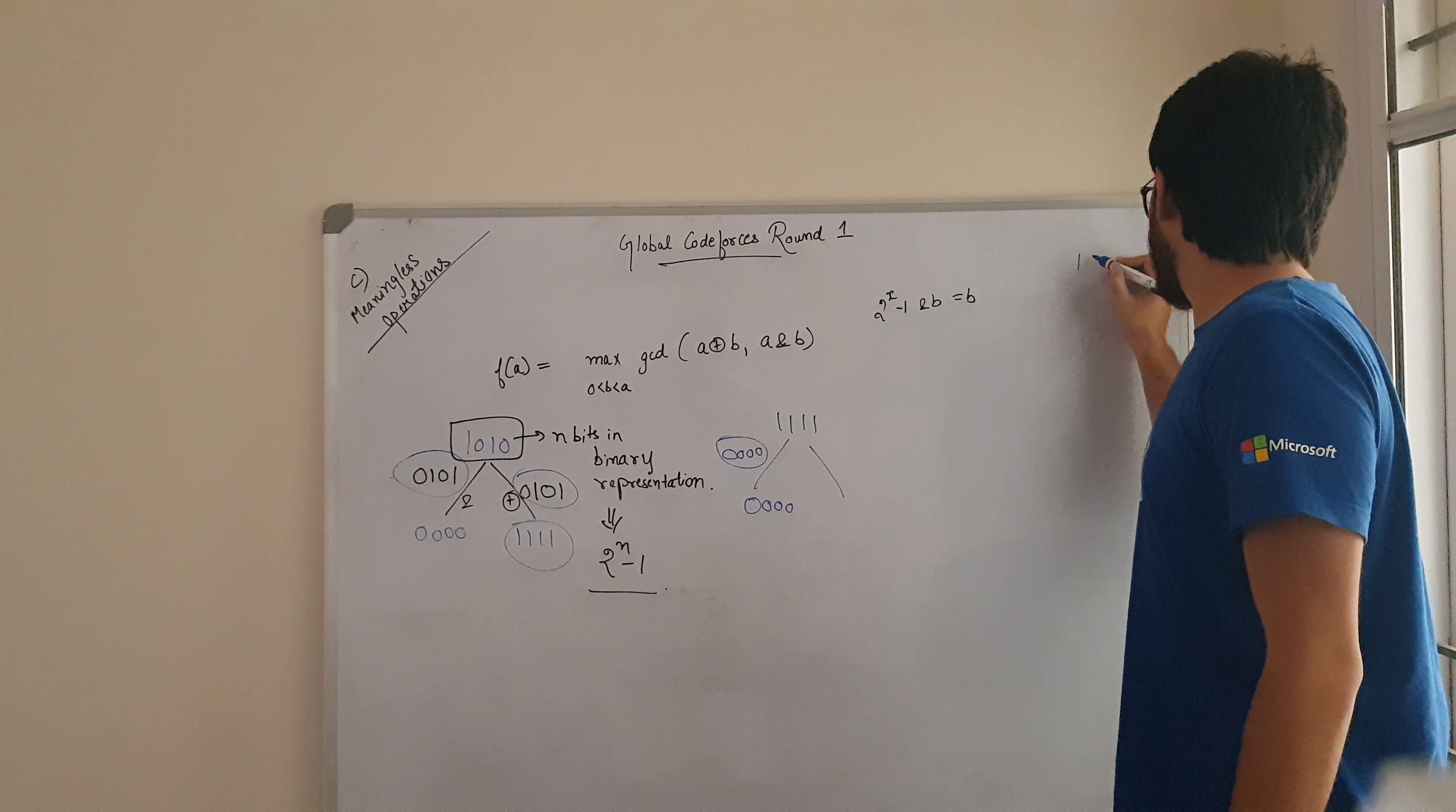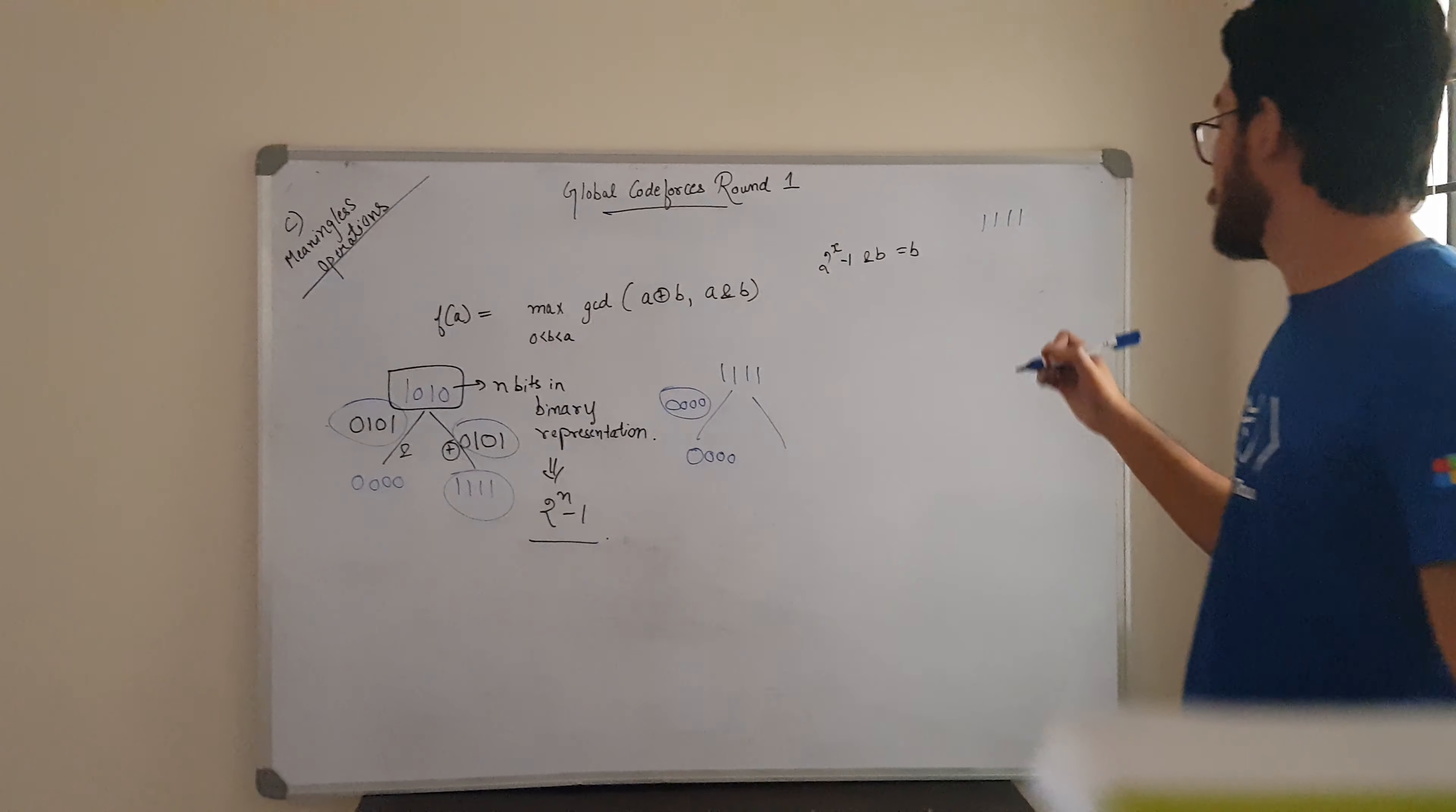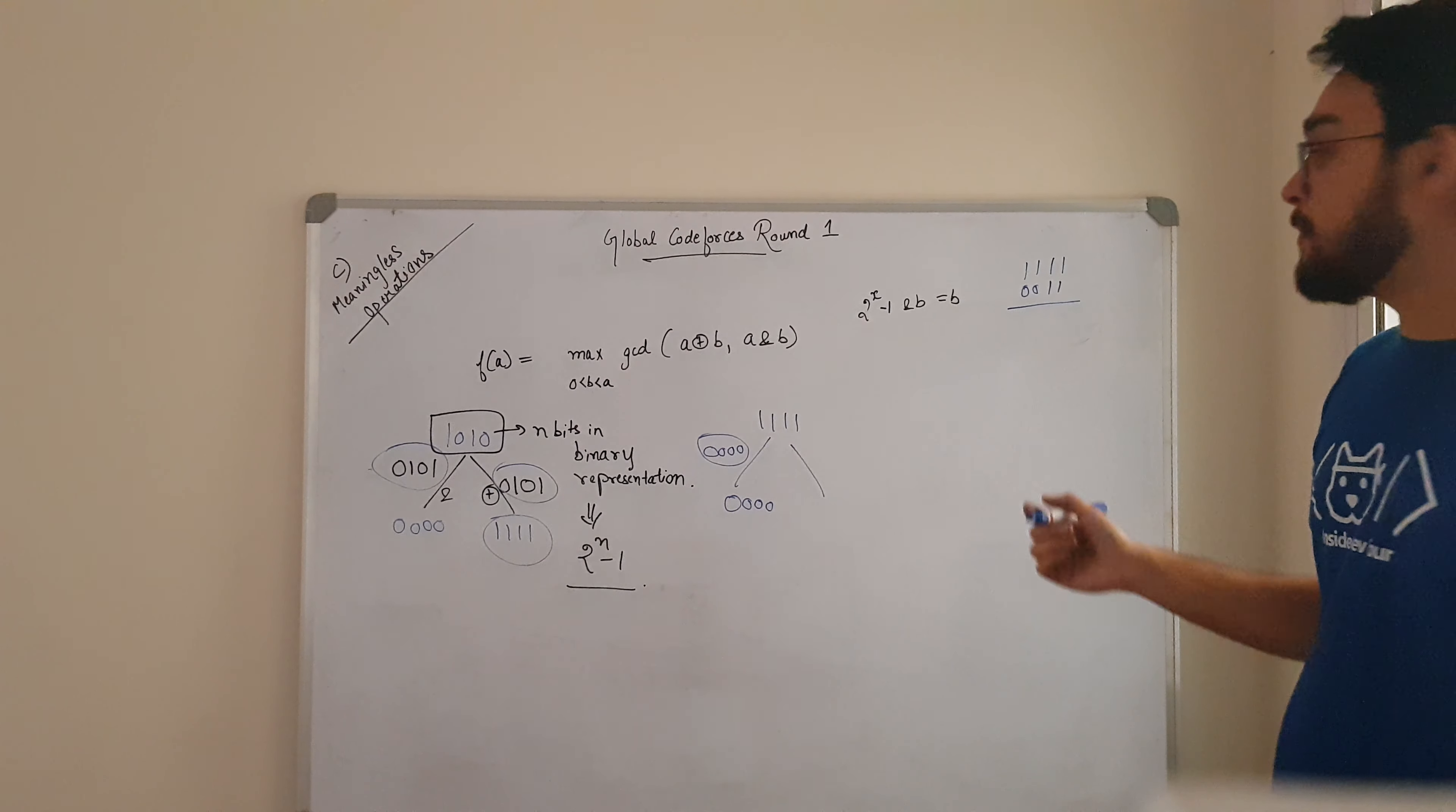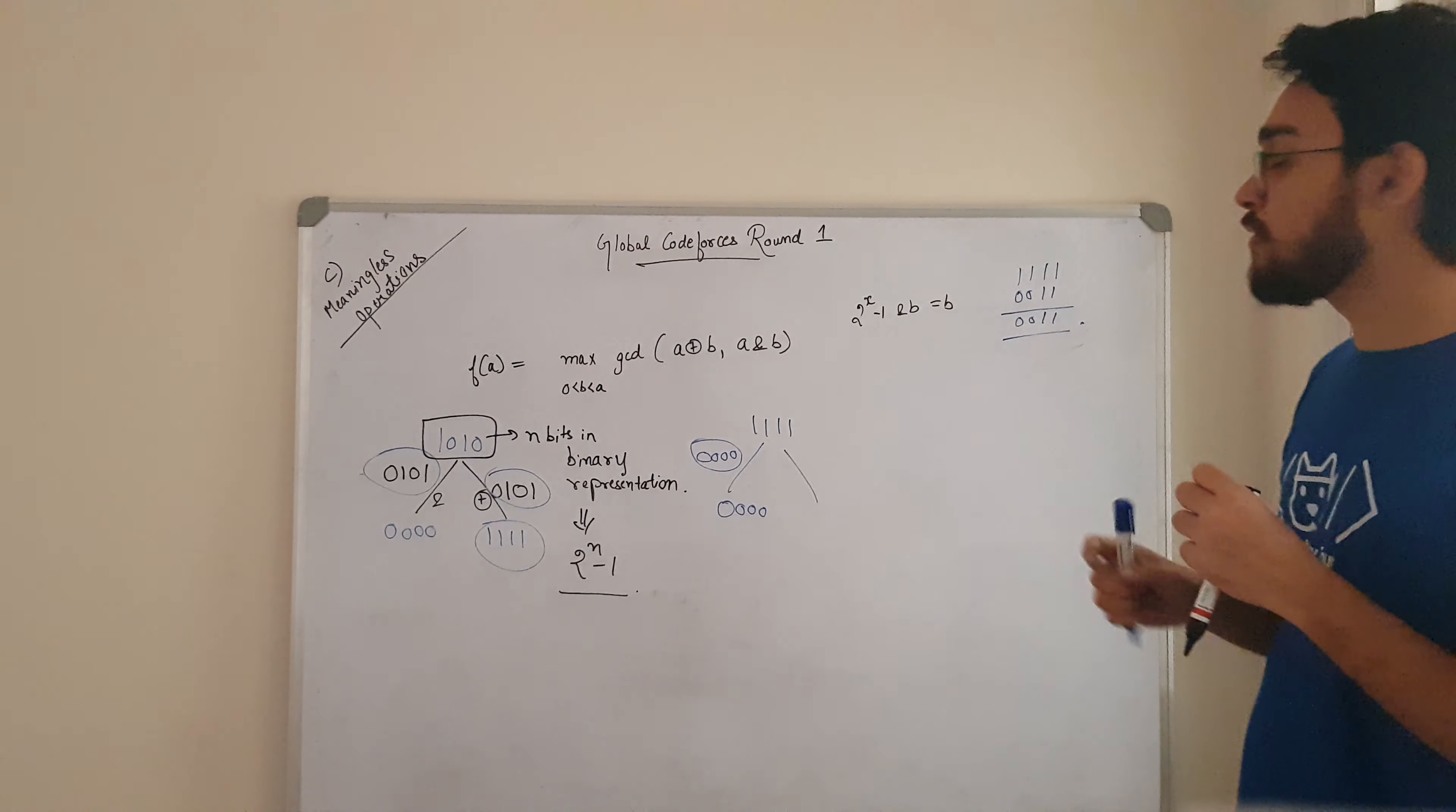How? Let's take an example. Like you have 4 ones. And you want to AND it with 3. So 0, 0, 1, 1. What it will be? It will be 3 only. So this is the thing. 2 to the power x minus 1 AND with any number B will be equal to B.